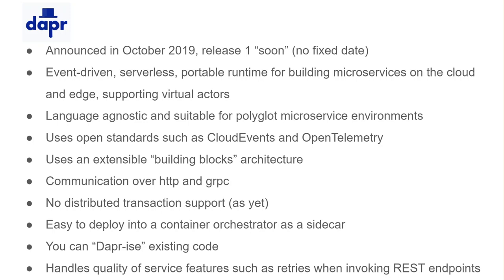At the heart of DAPR is the concept of building blocks. This building block architecture allows extensions to be added to DAPR over time, and you can choose whichever building blocks you need for the problems you're trying to solve — you can also create your own building blocks if needed. Examples of building blocks include things that talk to a Redis cache or a secret store, so accessing secrets should be fairly straightforward in a development environment. All communication with the DAPR APIs is done over HTTP or gRPC.